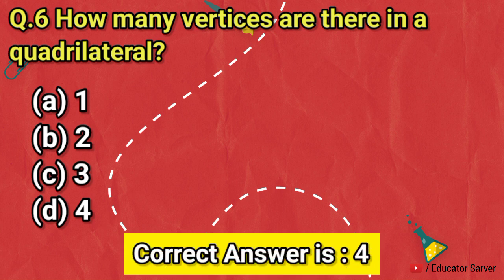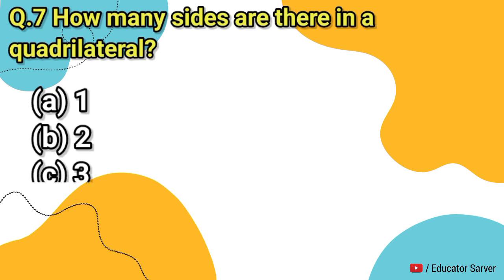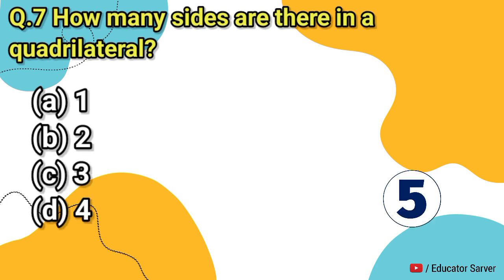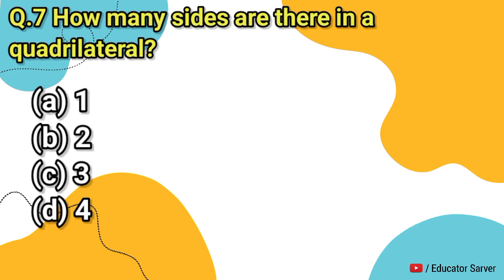The right answer for question six is four. Question number seven: how many sides are there in a quadrilateral? Options are one, two, three, and four. The right answer is four.